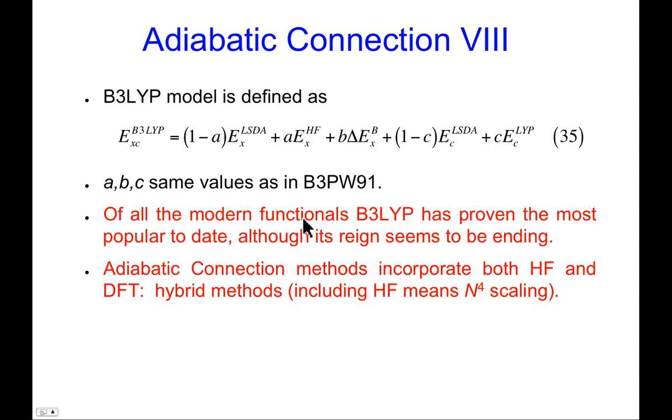Of all modern functionals to date, B3LYP has proven most popular, although its reign seems to be ending. Of course, whether through professional jealousy or what have you, B3LYP has become the functional that professional theorists love to hate, in part because many people adopt it simply in sort of a herd mentality. It seems like everybody's using it, so perhaps I should use it too. A better approach would be to say, I've seen other people use it on similar problems, and it seems to have worked, and that's why I picked it. If someone says that to me, I have reasonable respect. That's a good way to pick functionals to see if they've worked in similar systems.